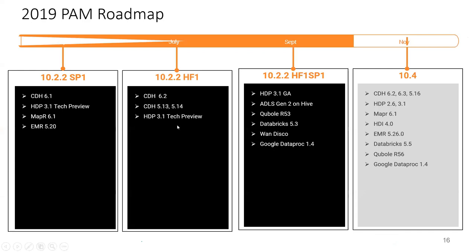On the PAM roadmap very specifically for Data Engineering: CDH, HDP, MAPR, HDI, EMR, and Databricks 5.0 — all these new versions have been included. Previously we used to call it hotfix 1 or service pack. Going forward you will see the versioning change. The next one would be 10.4.0.1.